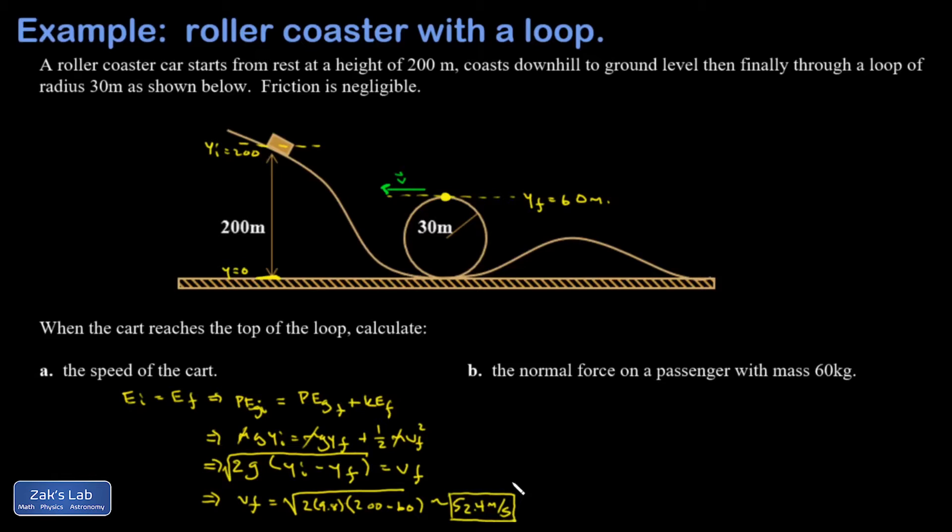So that's something in the neighborhood of 100 miles per hour through a pretty tight loop. That's going to be a lot of centripetal force. So part B, let's find the normal force on a passenger with a mass of 60 kilograms.